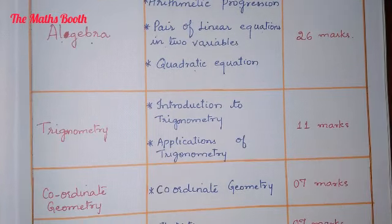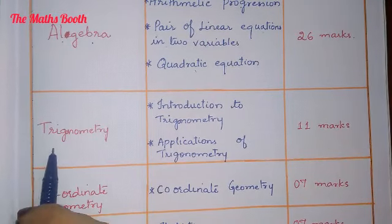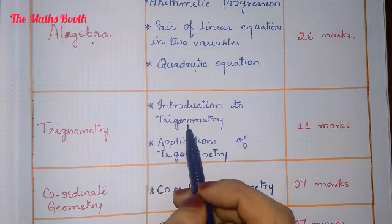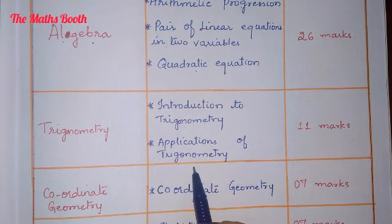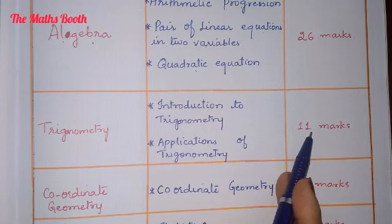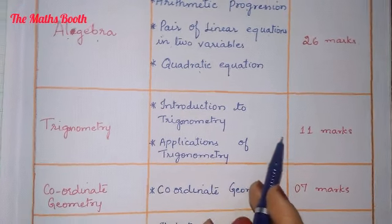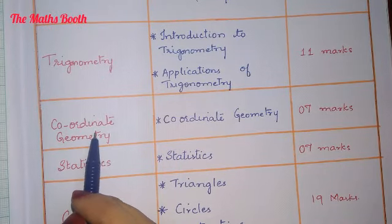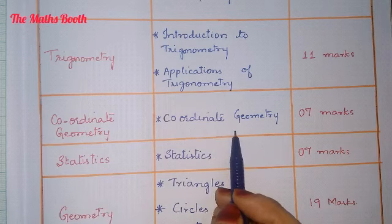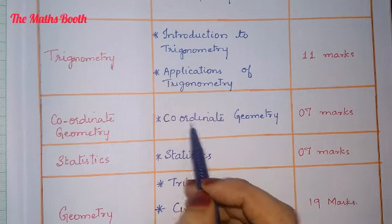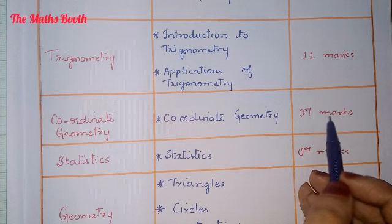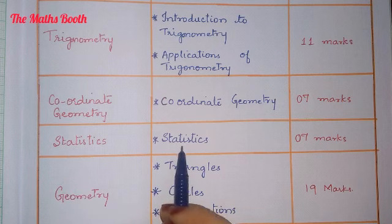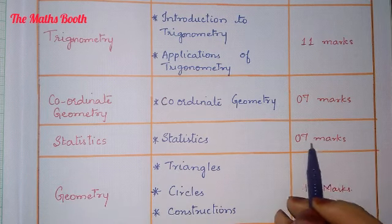The next theme is Trigonometry. In trigonometry we have two topics: Introduction to Trigonometry and Application of Trigonometry. From these two topics, 11 marks questions we will get in the examination. The next theme is Coordinate Geometry, which carries 7 marks. From Statistics, we are also going to get 7 marks.